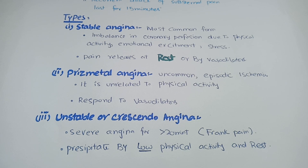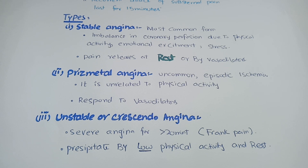In stable angina, pain is exaggerated by physical activity or stress, because during physical activity the demand of cells for oxygen increases. The pain relieves at rest. Prinzmetal angina is due to vasospasm of the vessel, resulting in precordial chest pain. It is uncommon, causes episodic ischemic pain, is unrelated to physical activity, and responds well to vasodilators.